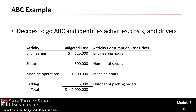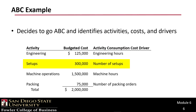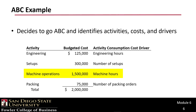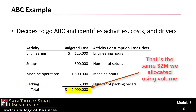HPT decides to go to activity-based costing. They identify the following activities, costs, and drivers. Engineering has a budgeted cost of $125,000 with the number of engineering hours as the cost driver. Setups has a budgeted cost of $300,000 with number of setups as the driver. Machine operations has a budgeted cost of $1.5 million with machine hours as the driver. Packing has a budgeted cost of $75,000 based on number of packing orders — totaling $2 million in overhead.